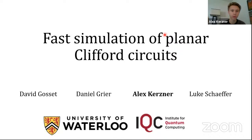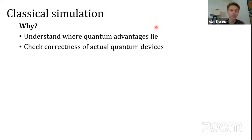Broadly speaking, this talk is about classical simulation, and there are a few different reasons why you might care about this. For one, you might want to understand where quantum advantages actually lie. If you're going to spend lots of money and expend lots of energy building a quantum computer, you'd better make sure that you're going to use it for something that couldn't just be done classically. And maybe another reason is when you actually do build a quantum computer, you want to check correctness.